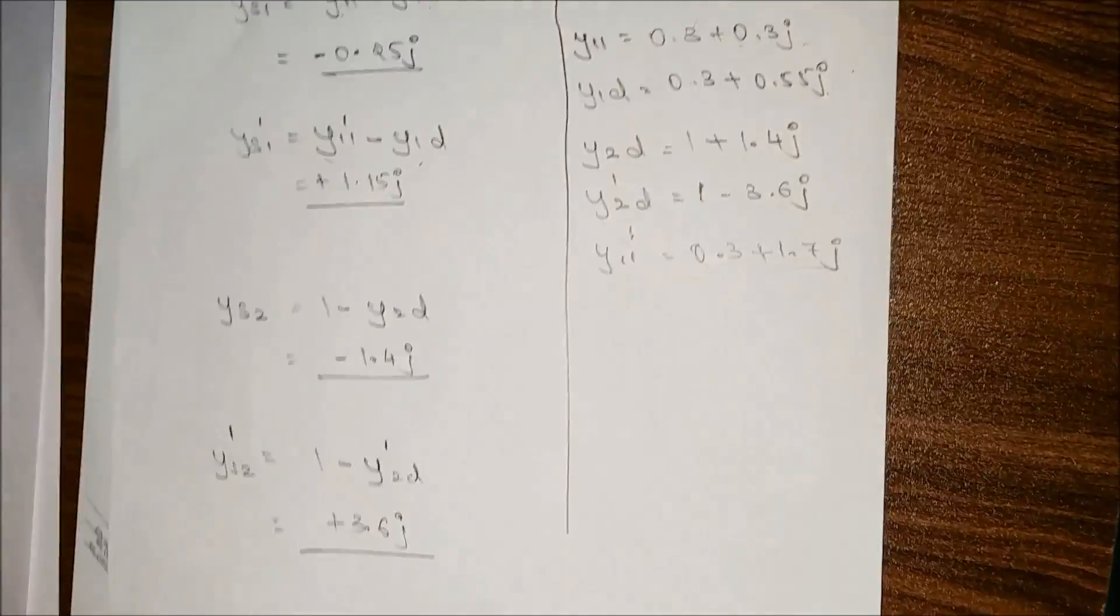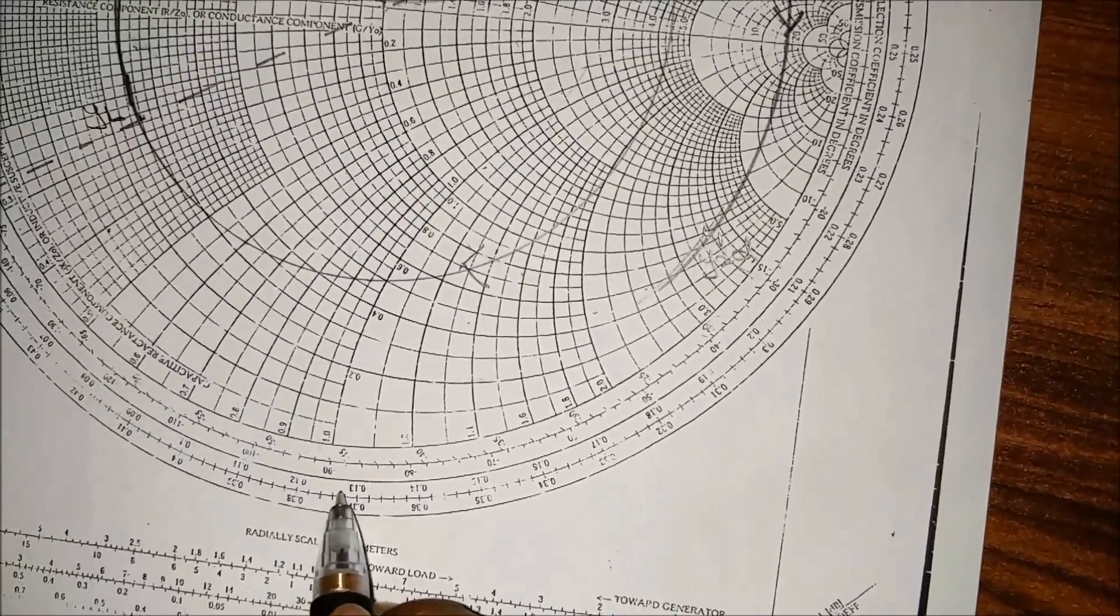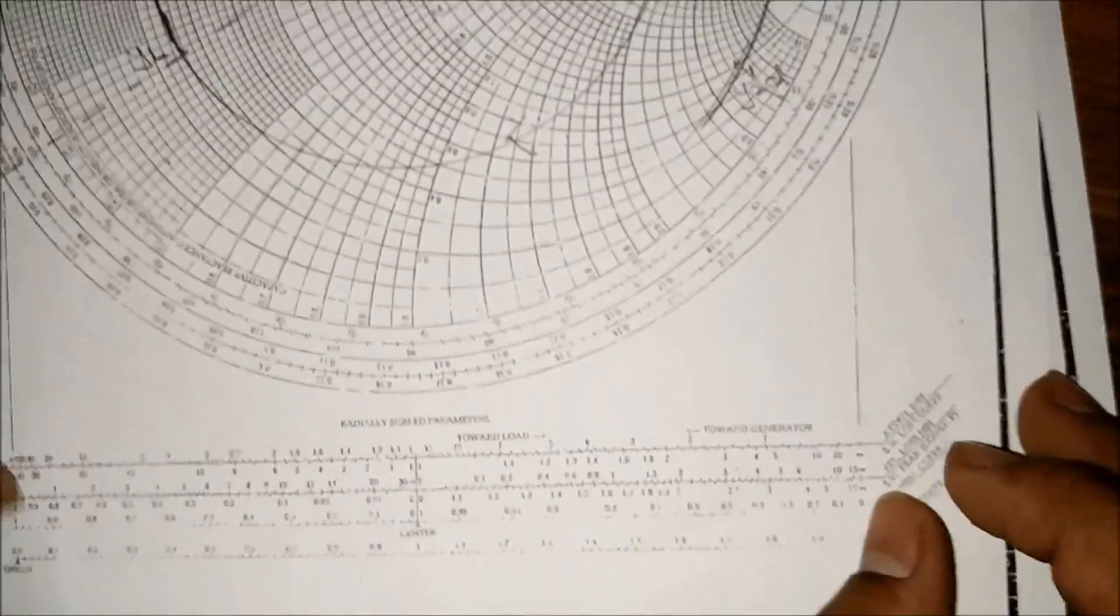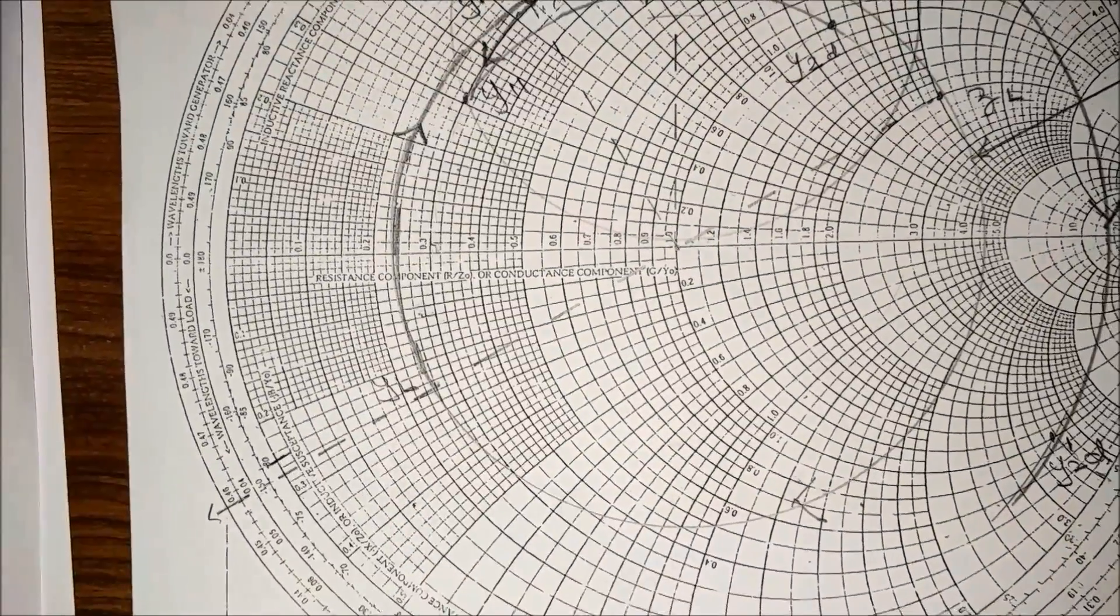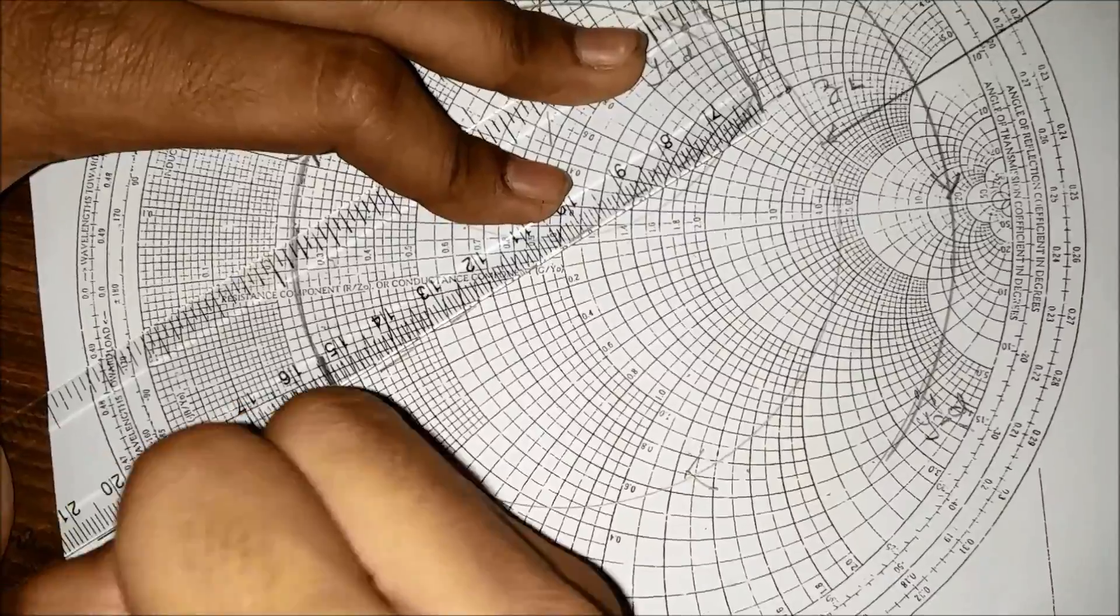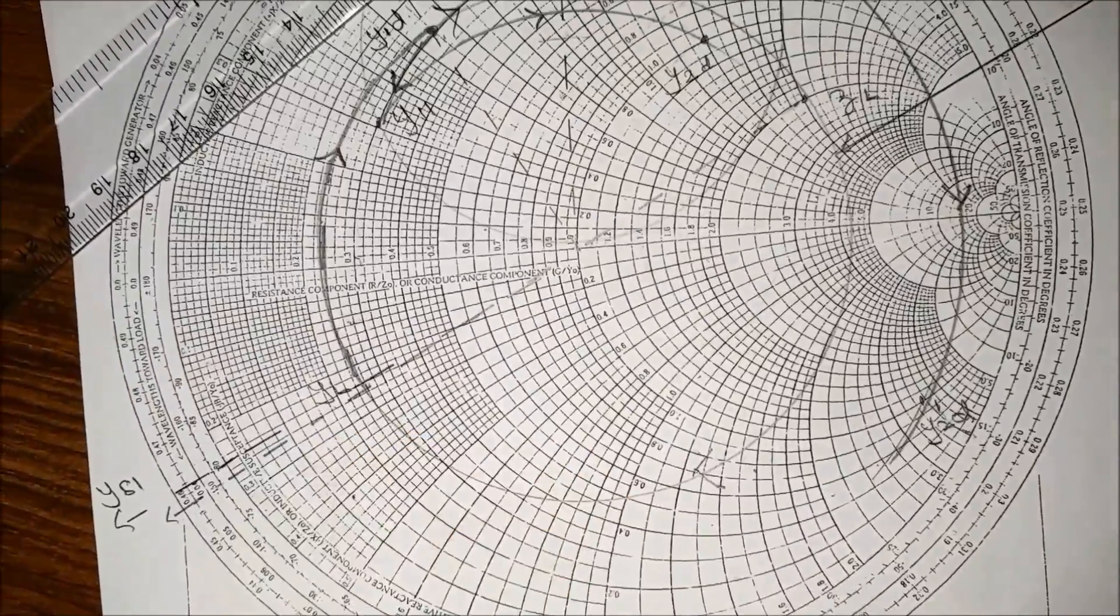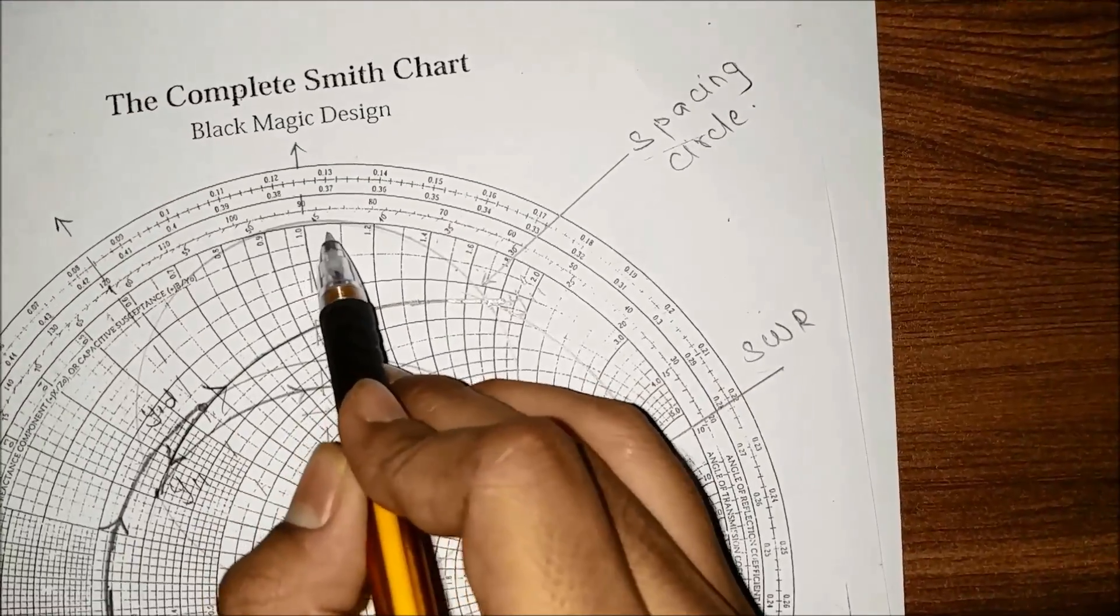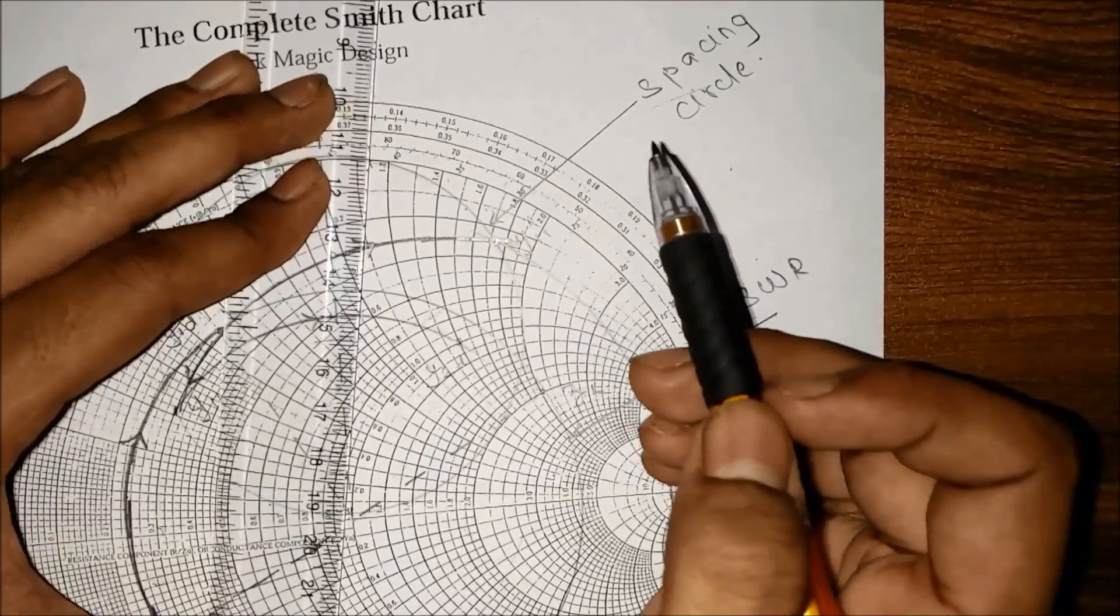We have to plot these on the Smith chart. Minus 0.25j is capacitive, so it will be somewhere down over here between 0.2 and 0.3. We extend that point and name it ys1. Then 1.15j is positive, it will be somewhere over here - this is 1, 1.1 will be somewhere over here and 1.15 somewhere over here. We extend that point outside as ys1 dash.